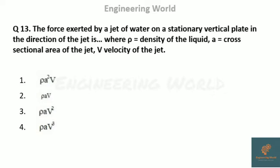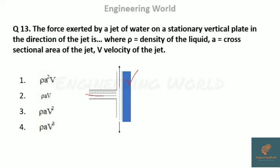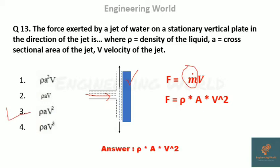The next question: the force exerted by a jet of water on a stationary vertical plate in the direction of the jet. Here rho is the density of the liquid, A is the cross-sectional area, and V is the velocity of the jet. By Newton's second law (law of momentum), force equals the rate of change of momentum: F = M-dot × V, where M-dot is mass flow rate. Since the plate is stationary, relative velocity equals velocity of the jet. Since M-dot equals rho × A × V, therefore F = rho × A × V².